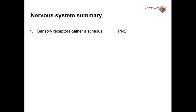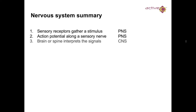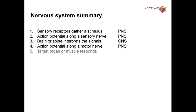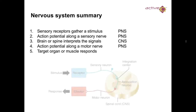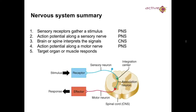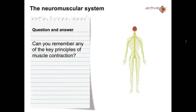Here's a summary of how it works: sensory receptors gather a stimulus via the PNS, an action potential travels along the nerves, the brain or spine interprets the signals, and then an action potential along the nerve targets an organ or muscle to produce a response. The stimulus and receptor feed into sensory neurons through the spinal cord, and then out via the motor unit — the effector — to produce the response.